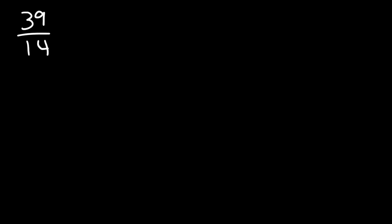But let's convert this into a mixed number. So let's use long division. How many times does 14 go into 39? 14 goes into 39 two times. 14 times 2 is 28. And 39 minus 28 is 11. So this is going to be 2 and 11 over 14.